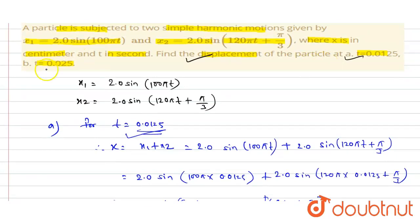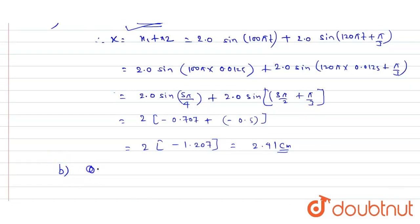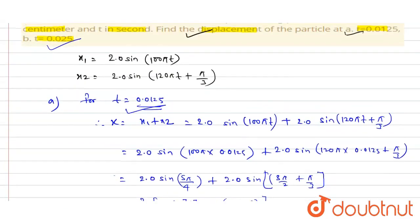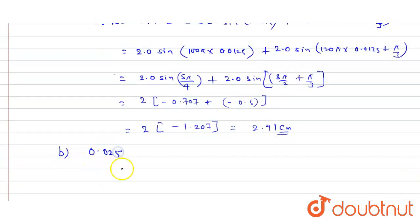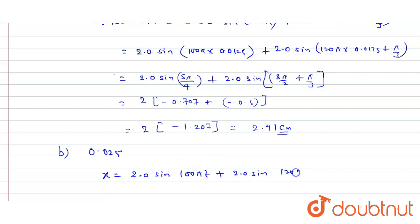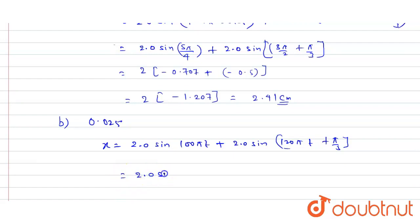For part (b), time t = 0.025 s. The total displacement x = x1 + x2 = 2.0 sin(100π t) + 2.0 sin(120π t + π/3). Substituting t = 0.025: 2.0 sin(100π × 0.025) plus 2.0 sin(120π × 0.025 + π/3).